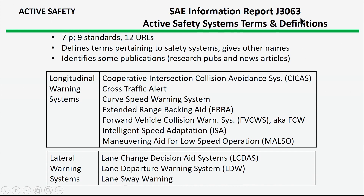The next topic is active safety. One seminal standard in this area is SAE J3063, which has terms and definitions. Standards associated with definitions tend to be the least controversial and are most likely to get reasonable acceptance quickly. This document is fairly short — only seven pages long. It's kind of unusual because it references some URLs. It talks about different kinds of systems related to active safety. Their descriptions are sometimes a little more general than you'd like, but at least they identify the systems and have some use in that way.